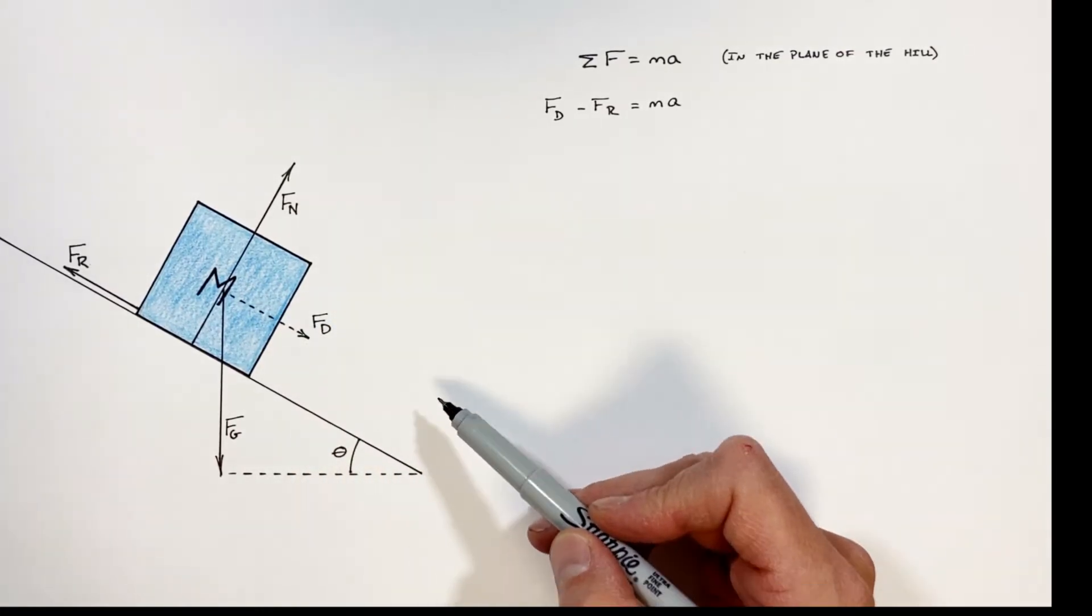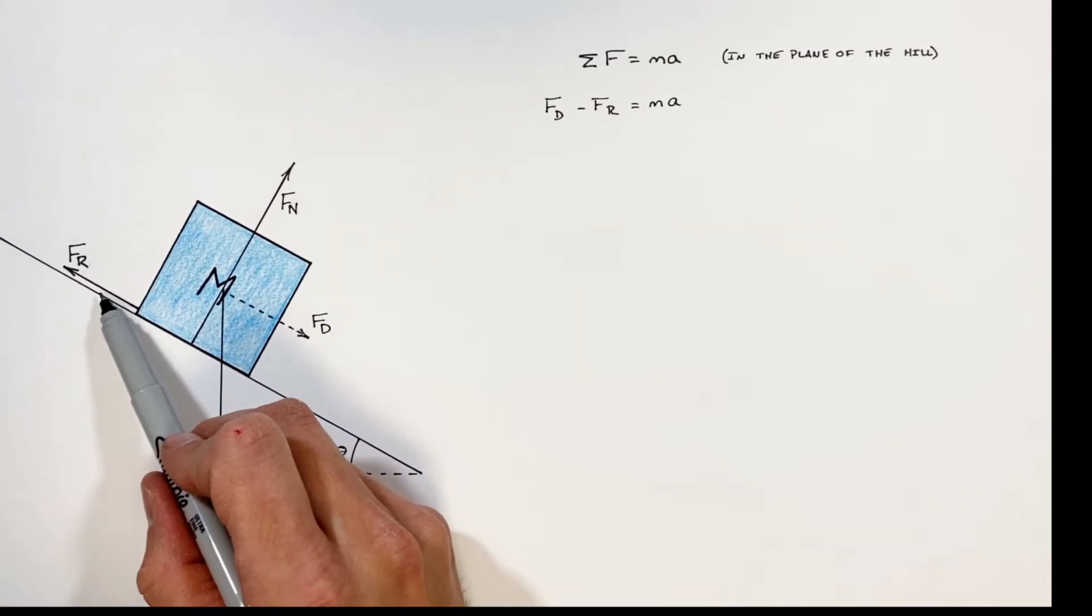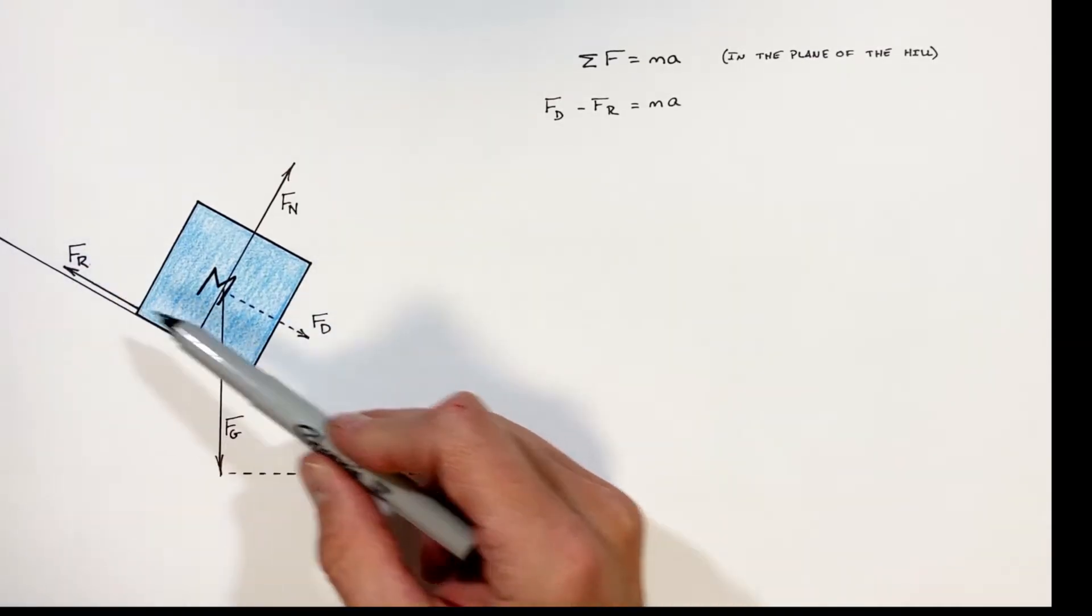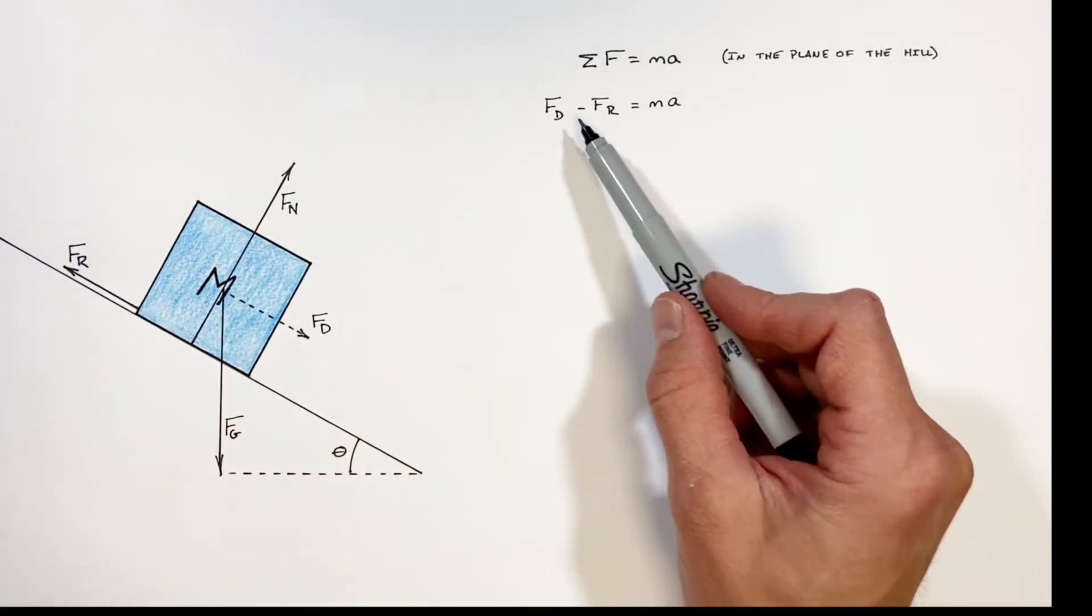So we're saying the force down the hill is in the positive direction, and the friction force is going to be up the hill in the opposite direction, so I'm saying it's in the negative direction.